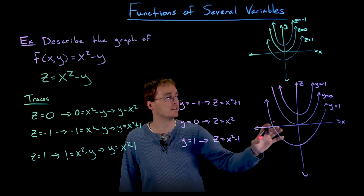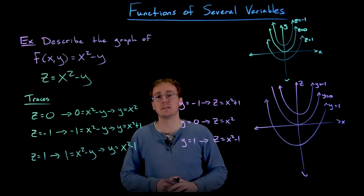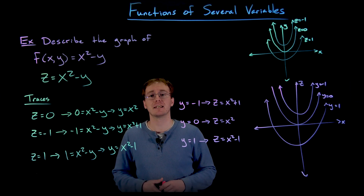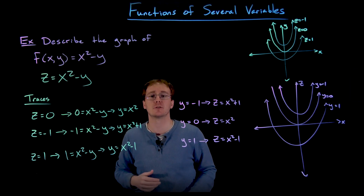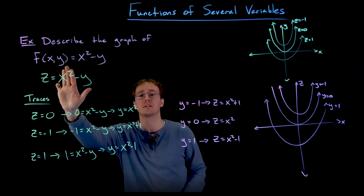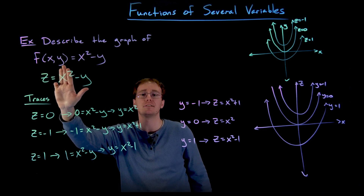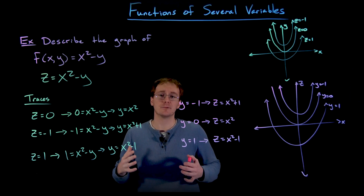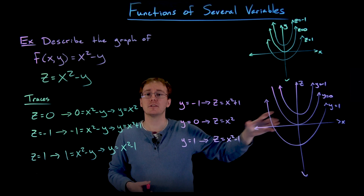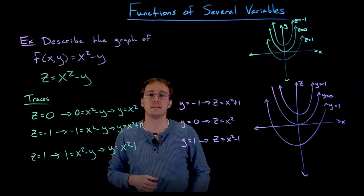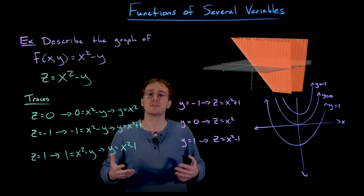To get more perspective, we can also look at traces in the yz-plane by setting x equal to constant values. If we set x equal to a constant, we get linear equations in z and y, so all the traces in the yz-plane are just lines. What we see when we put all this information together is that we're traveling along our surface by moving along shifted parabolas attached to lines in the yz-plane. Let's go ahead and look at the graph of this function in GeoGebra to see where all these level curves are coming into play.